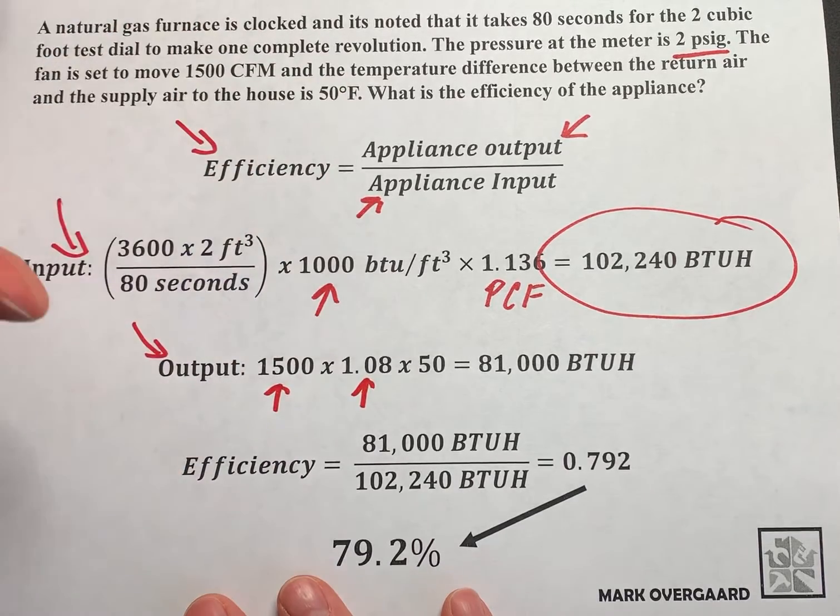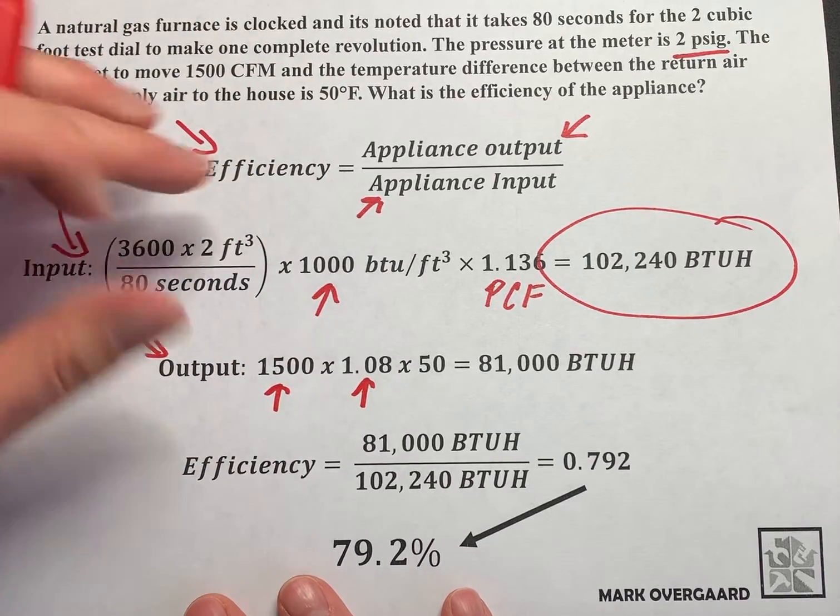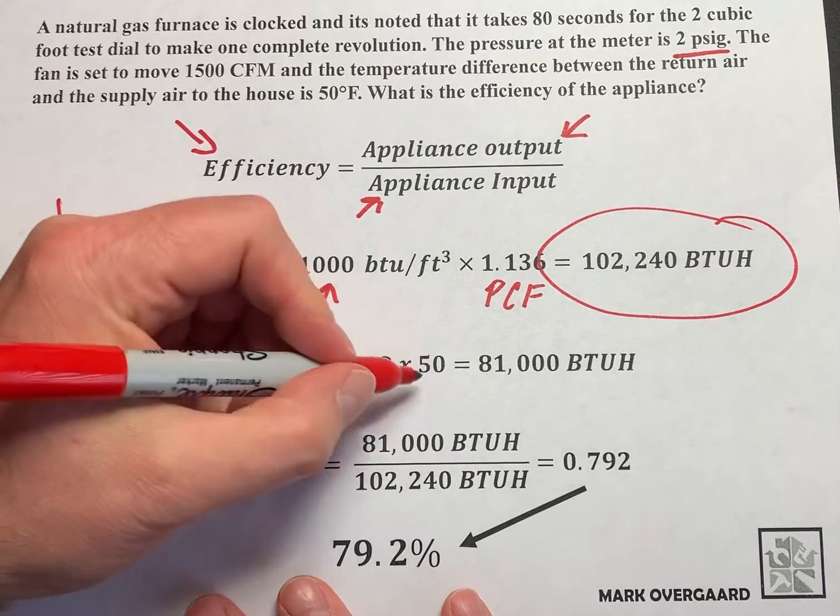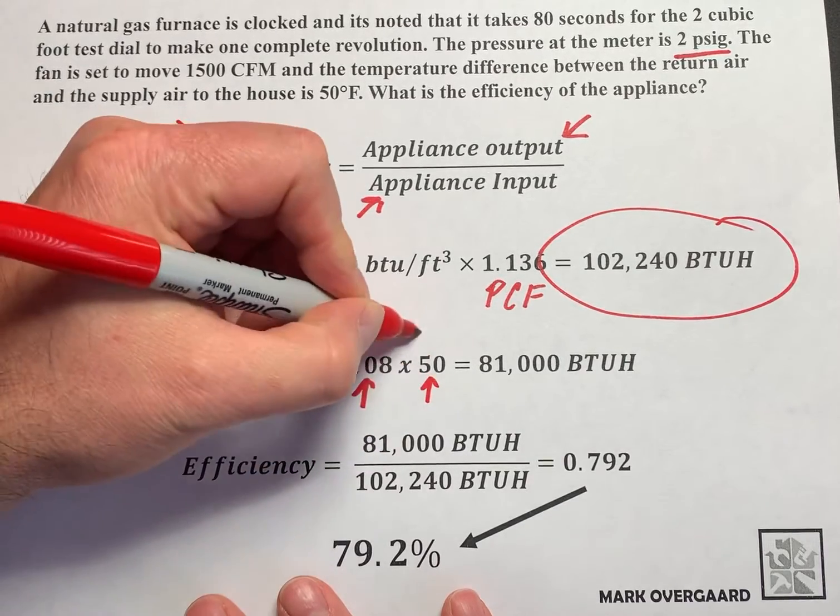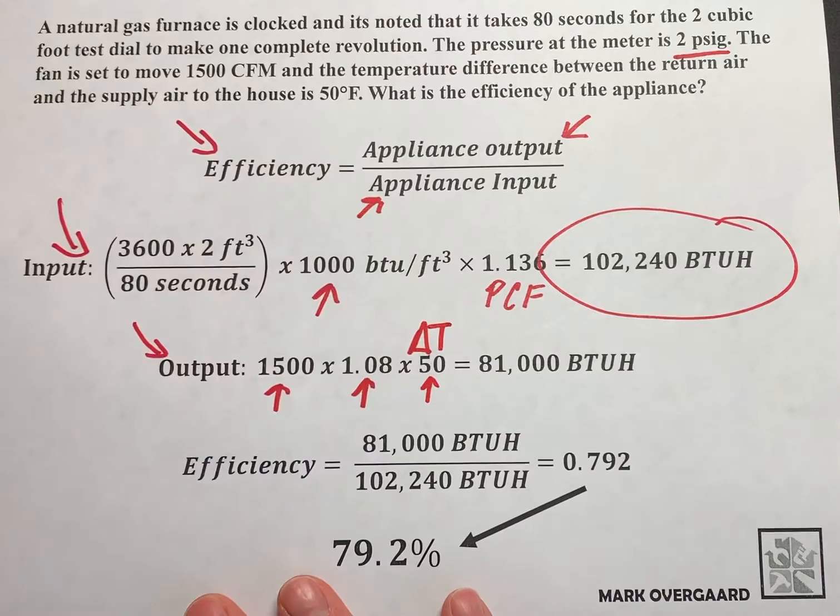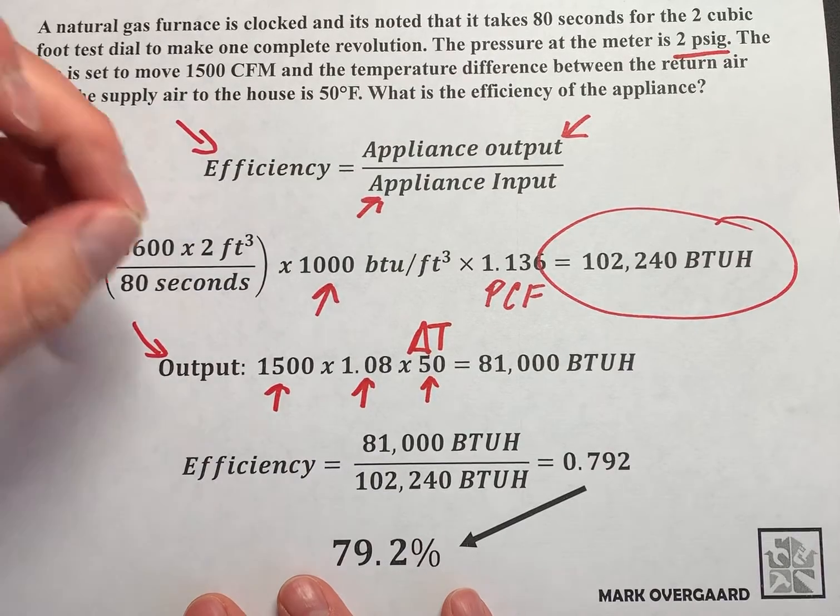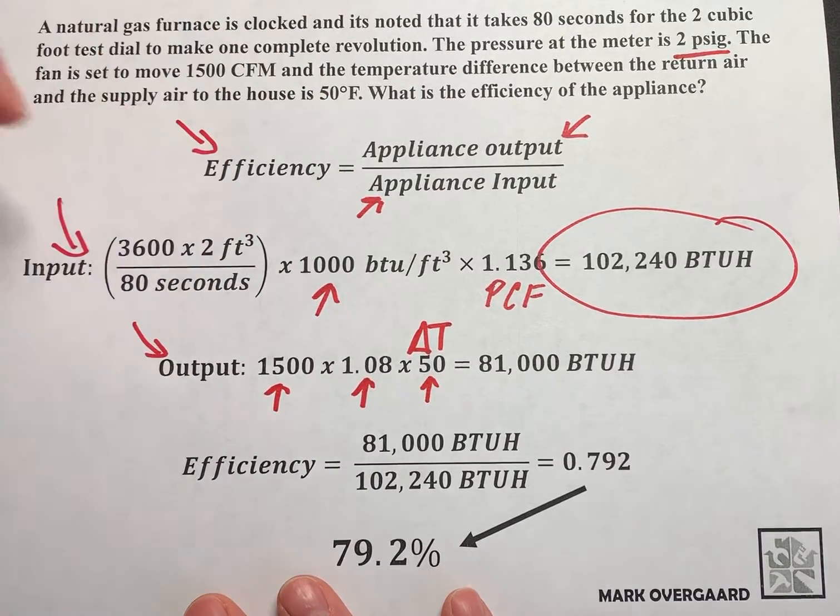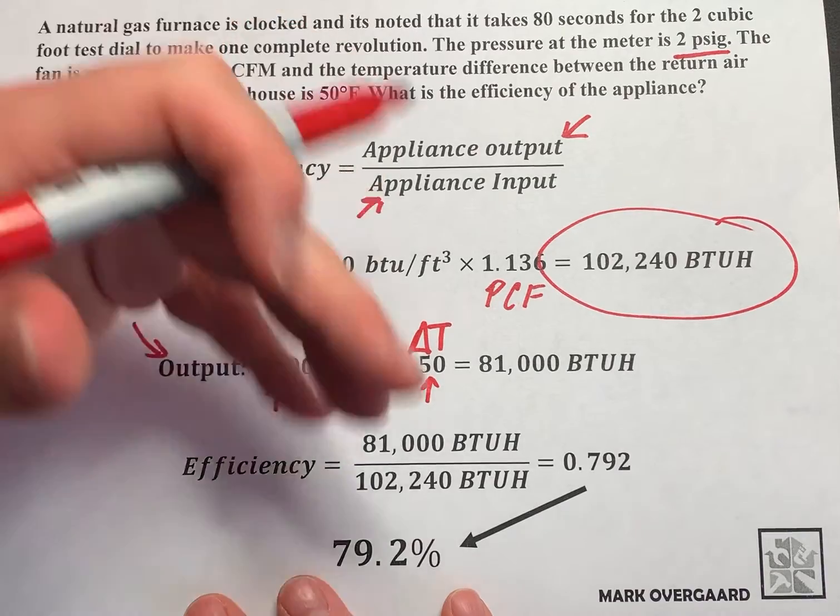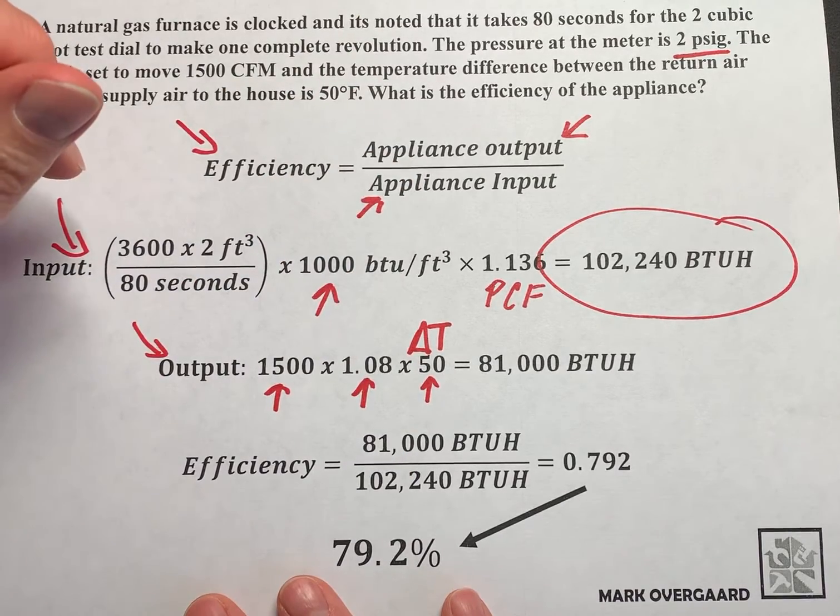It's always in the formula. You just got to remember it. It's never going to change. The 50, that's your delta T. That's your change in temperature from what we send out to the house and what comes back into the furnace. So basically the difference is how much heat is dissipating into the house.